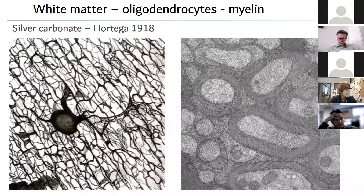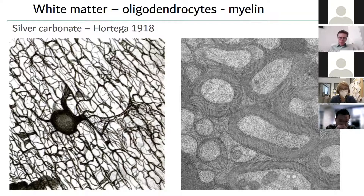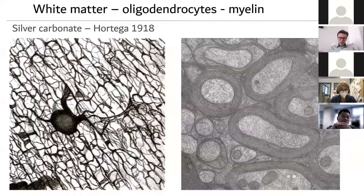Ortega used silver carbonate staining techniques. He called this a third element after the first and second elements, which are the neurons and astrocytes. The third element comprised oligodendrocytes and microglia together, as the staining at that time could not distinguish between these two cells. He also didn't know that oligodendrocytes are the cells that produce myelin.